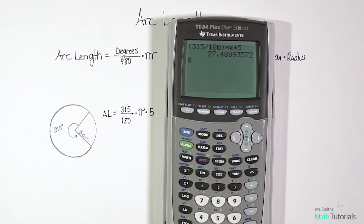We get an answer of 27 point and then a really long decimal. Let's just round to the nearest hundredth. So in that case it would be 0.49.